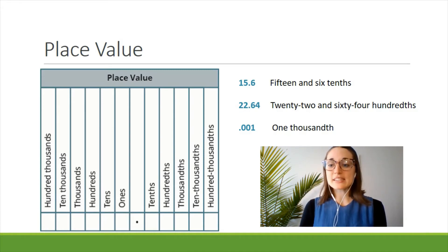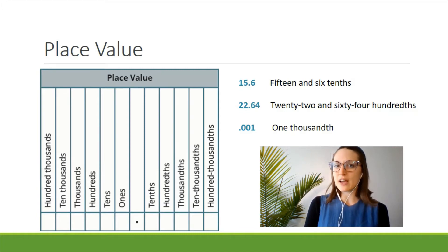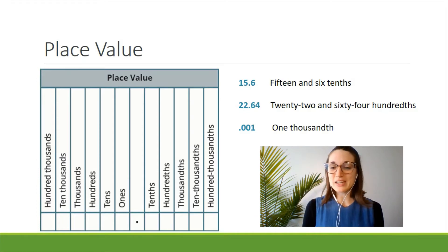When reading a decimal, you say the whole number first and then use the word 'and' to represent the decimal. Then you read the number on the other side. When you've finished reading that number, you look at where the last number ends, which place value it's in, and then you read that place value. Let's look at some examples.